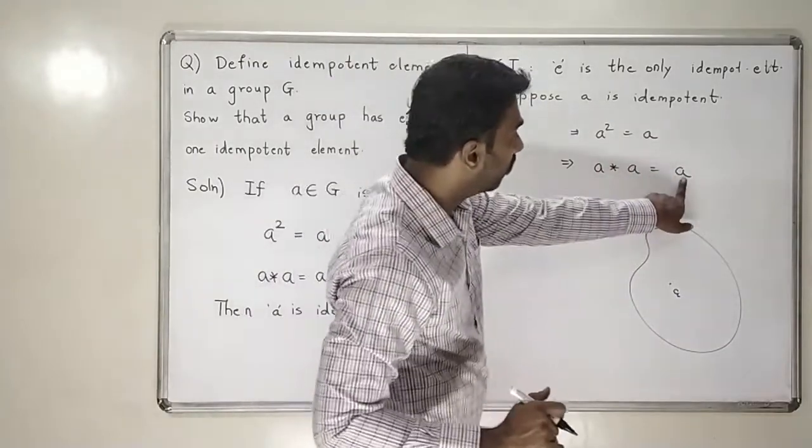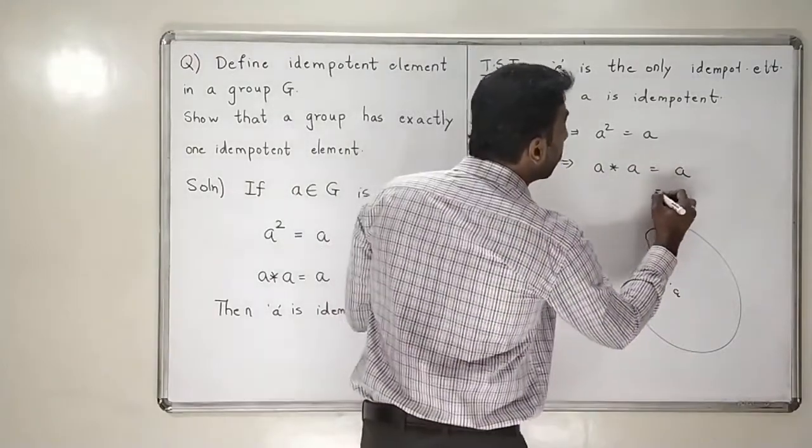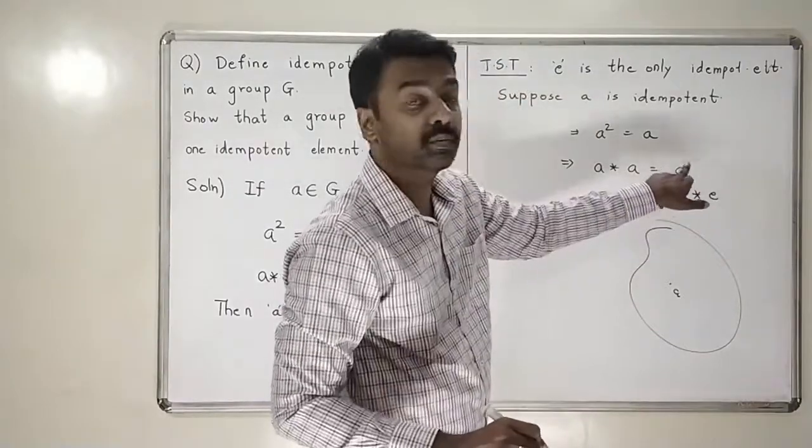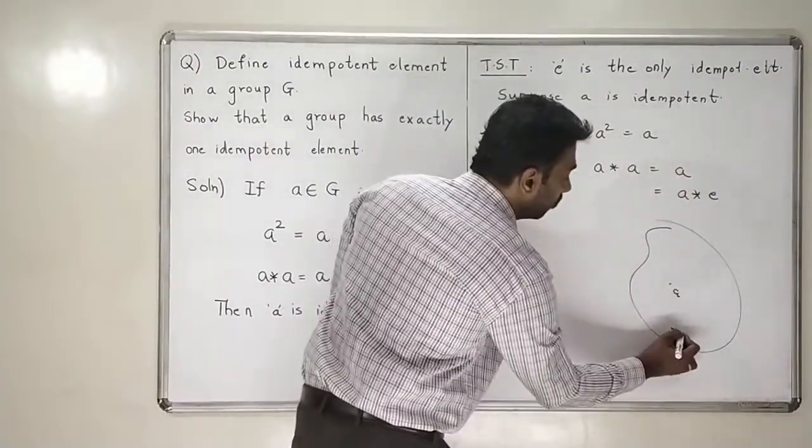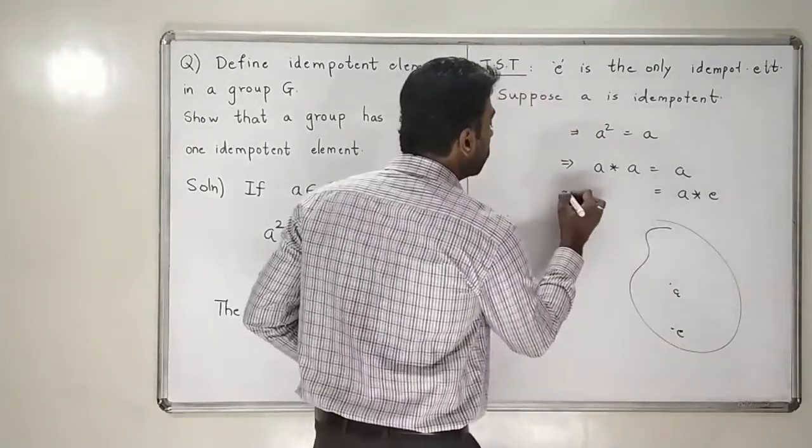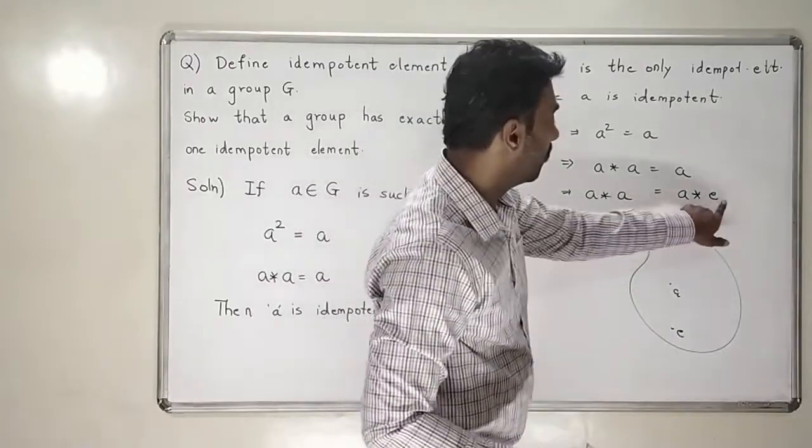Now, this a, I can further write it as a star e. Means I will multiply that a like this. Because a star e is again a. Who is e? E is the identity of the group. That has to be in the group. So, this means that a star a is equal to a star e.